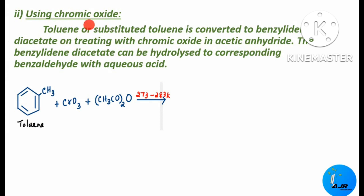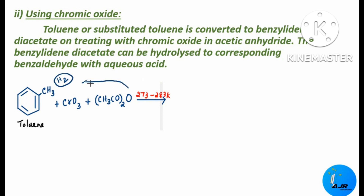The next method uses chromic oxide. Here, toluene or substituted toluene is converted to benzaldehyde diacetate by treating with chromic oxide in acetic anhydride (CH3CO)2O. In the presence of chromic oxide and acetic anhydride, toluene is heated at a temperature between 273 to 283 Kelvin. There is removal of two hydrogen atoms and an oxygen, that is removal of H2O, to form the intermediate product.